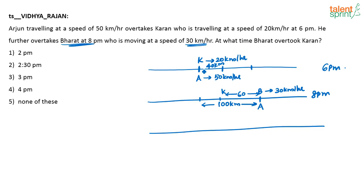So at 6 p.m., Bharat would have actually been 40 km behind his 8 p.m. position, meaning Bharat was 40 km from where Karan is at 6 p.m. Going back 2 hours, the distance between Karan and Bharat is reduced. At 8 p.m. it is 60 km; at 6 p.m. the distance between Karan and Bharat is 40 km.